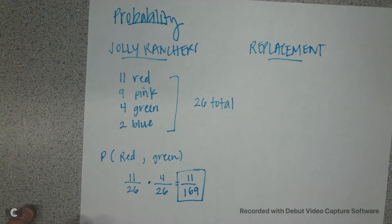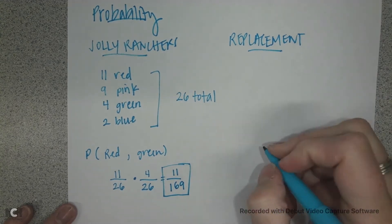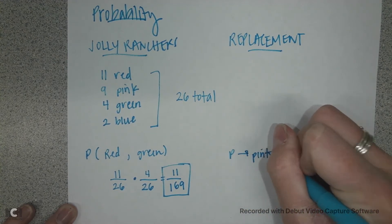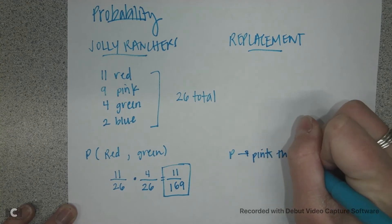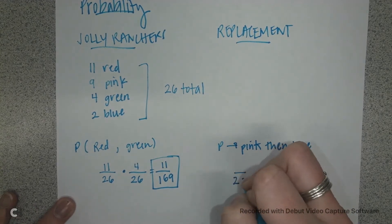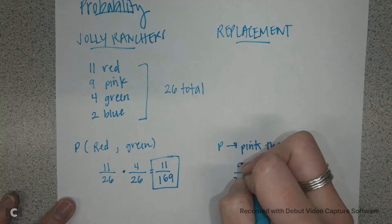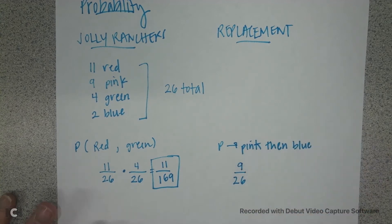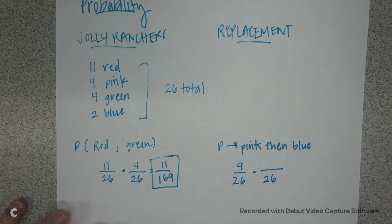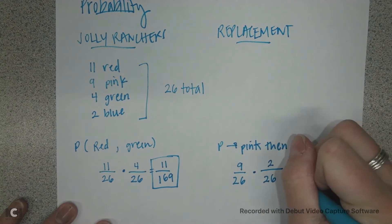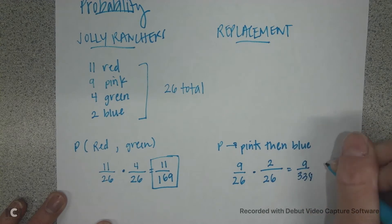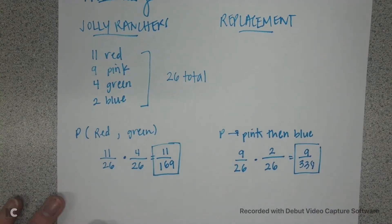Now let's figure out the probability of choosing a pink and then a blue. We still have our same total of 26. Nine of them are pink, then I've replaced it back in my bag and I still have a total of 26, and there are 2 blue ones. When we multiply these together and reduce, we get 9 over 338.